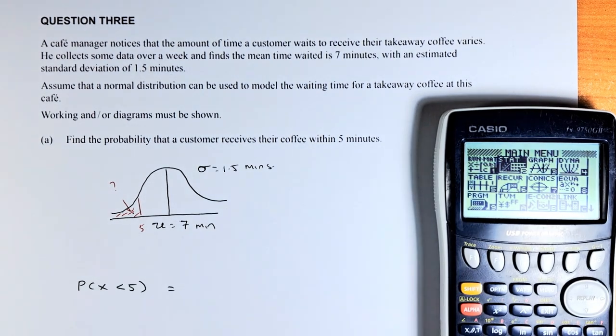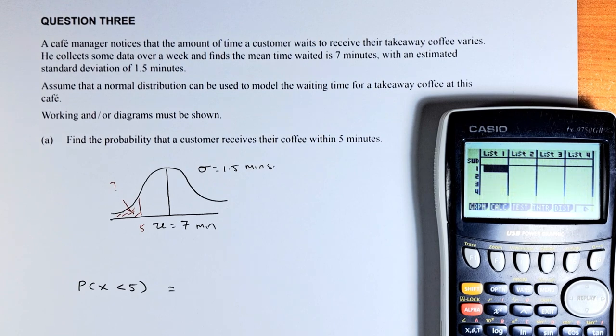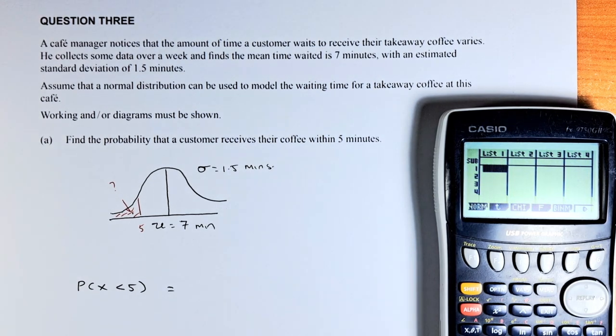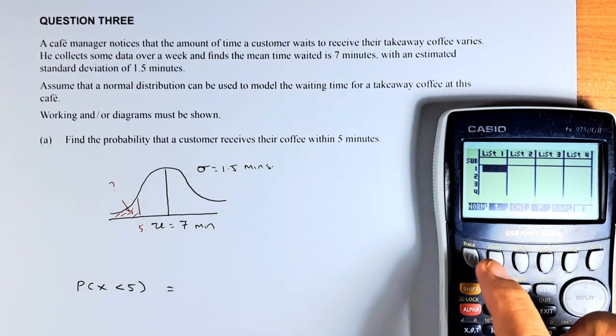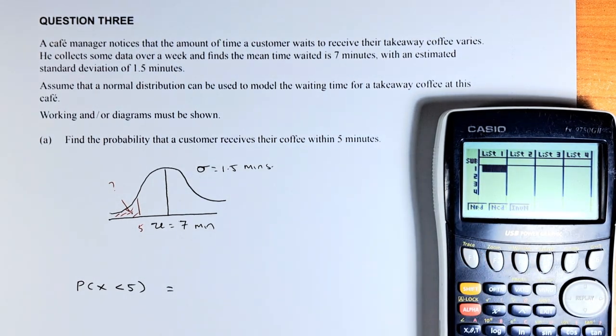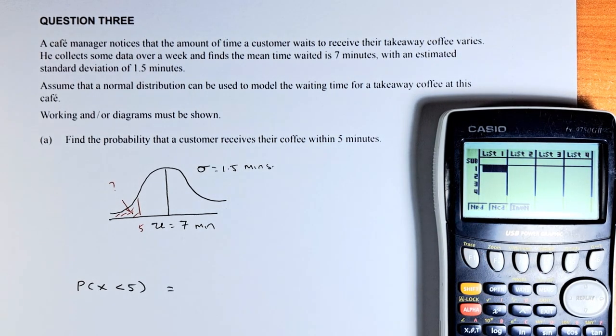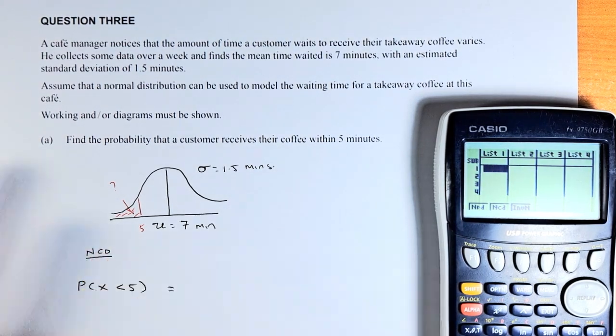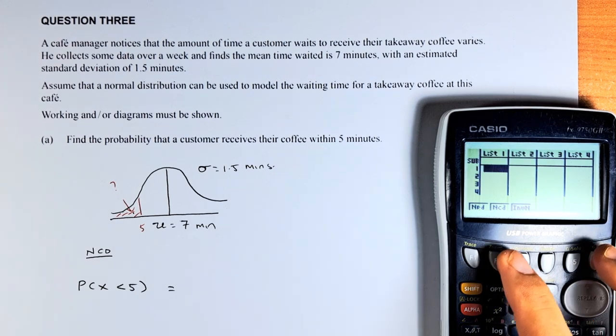Go to statistics, execute. Now go to distribution, F5, and then normal is F1, press F1. Remember in normal, we always use NCD because it's a continuous distribution. So NCD is F2.